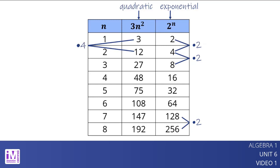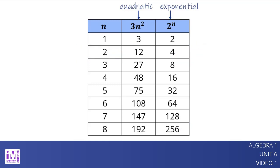When n increases from 2 to 3, the factor is 27/12, or 2.25. When n increases from 7 to 8, the factor is about 1.31. As n increases to larger and larger values, 3n² grows by a factor that gets closer and closer to 1. A quantity that doubles will eventually overtake a quantity growing by this smaller factor at each step. In general, increasing exponential functions eventually surpass increasing quadratic functions.